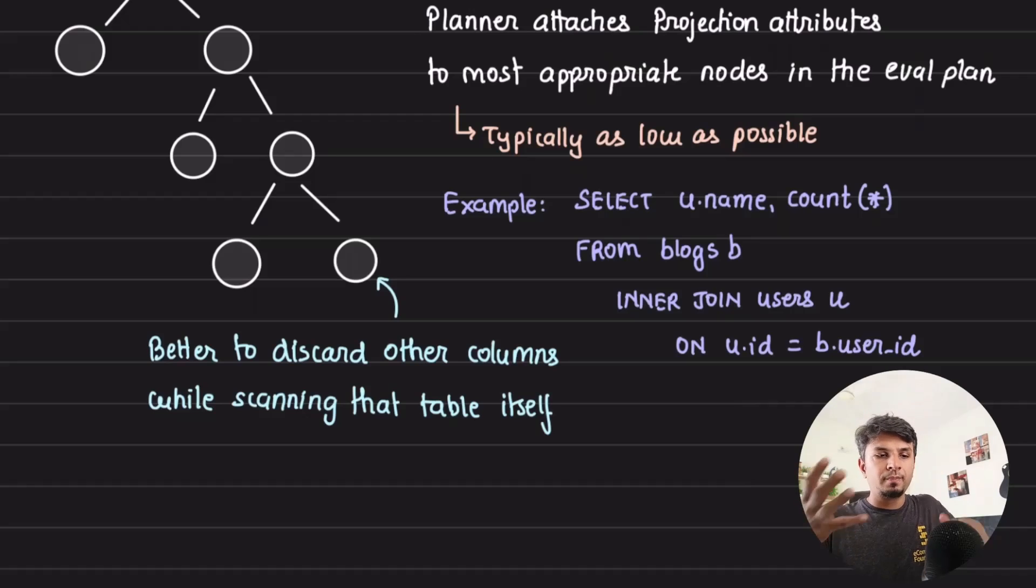These are the ways through which Postgres or in general, any relational database creates all possible plans to execute the same query resulting in the same result set and then figures out the best one. In subsequent videos, we'll also touch upon how the cost is computed. But in this one, I just wanted to emphasize on how multiple query execution plans are generated by Postgres and in general, any relational database.